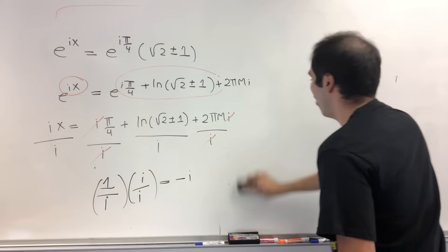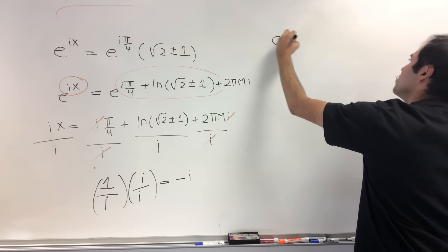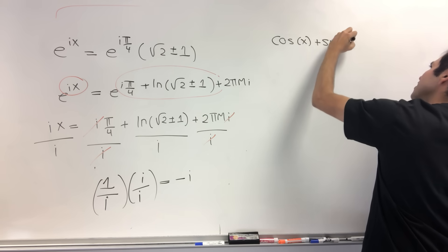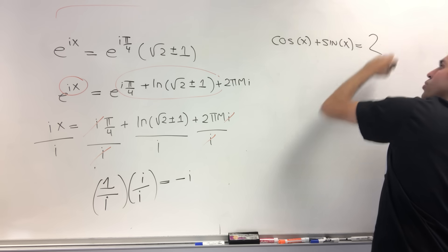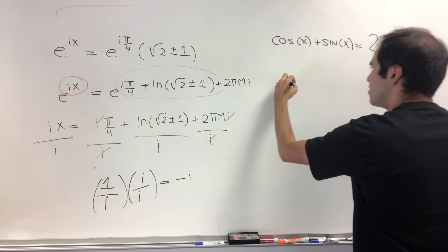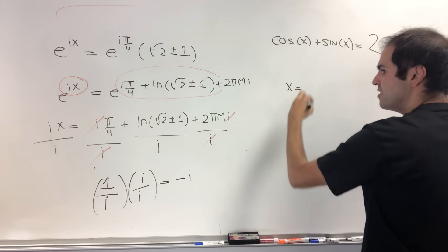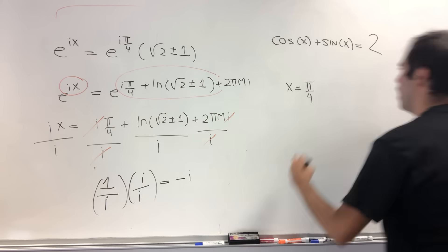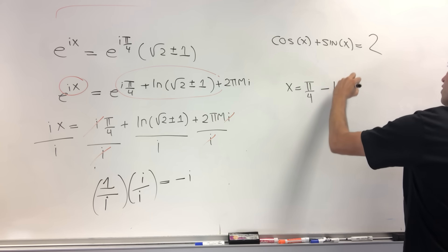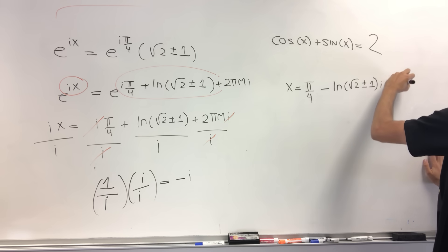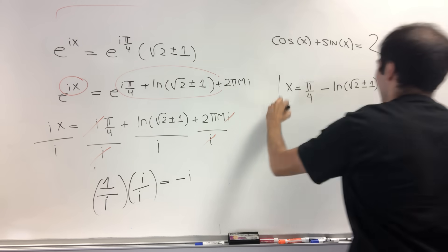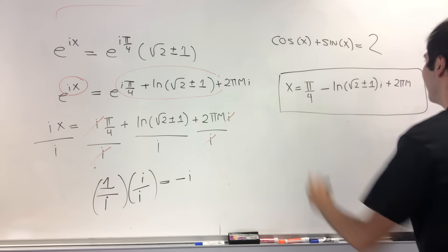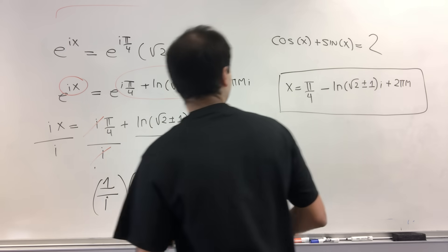All right, and in the end, remember what did we want to solve? We wanted to solve cos(x) + sin(x) = 2. Well, now we found our explicit solution. x is π/4 - i times ln(√2 ± 1) + multiples of 2π. Whoa. And by the way, the multiples of 2π, it makes sense, because this is periodic.